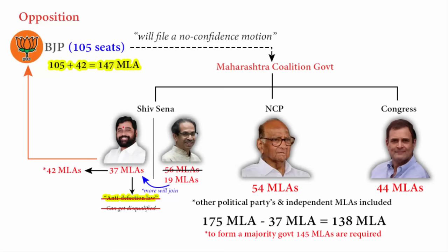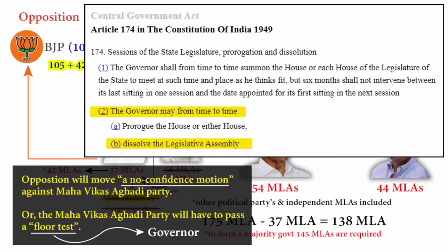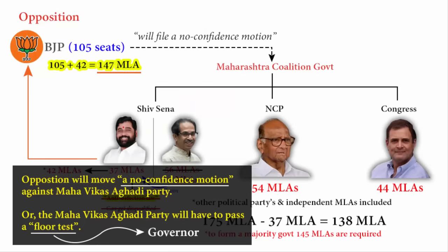If he doesn't have a majority, he will be asked to resign. Once it is established that the Mahavikas Aghari Party has lost its majority, the new Shiv Sena group under Eknath Shinde may give support to BJP, and together they can claim to form the government by exceeding the minimum required 144 seats. The floor test is ordered by the Governor under Article 174 of the Constitution, and as per this article, if the existing Chief Minister fails to prove majority, the Governor has the constitutional power to dissolve the Legislative Assembly.